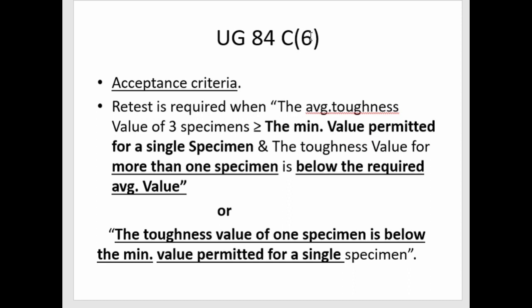In accordance with UG 84 C6, a retest is required when the toughness value of three specimens is greater than or equal to the minimum value permitted for a single specimen, and the toughness value for more than one specimen is below the required average value, or the toughness value of one specimen is below the minimum value permitted for a single specimen.